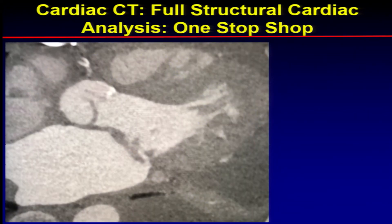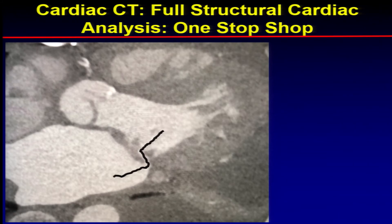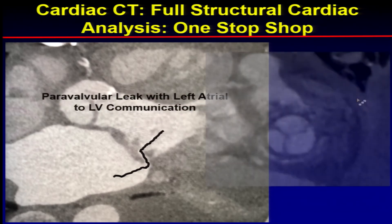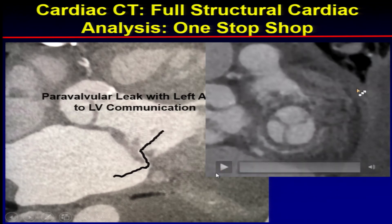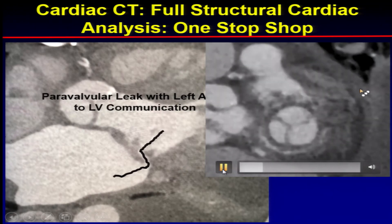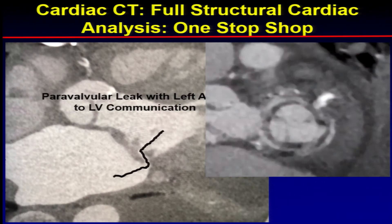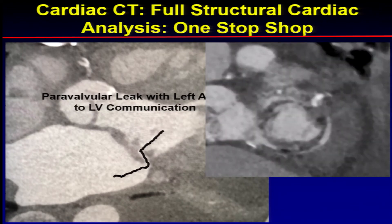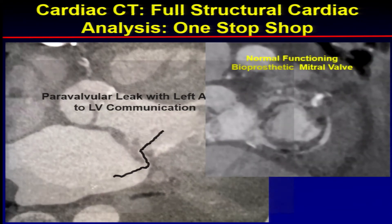We were also able to look at the paravalvular leak — you can see it in the posterior aspect of the annulus in terms of the size and shape, potentially for plugging. We were also able to look at the valvular function. The patient's bioprosthetic valve actually functioned totally normally, even though she had that significant paravalvular leak.